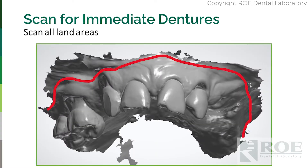One thing to remember with scanning dentures is to scan all land areas. That means we want the full roll, the vestibule, all the areas — even the edentulous areas. Just scan everything. Just imagine you've made a custom tray and scan away.